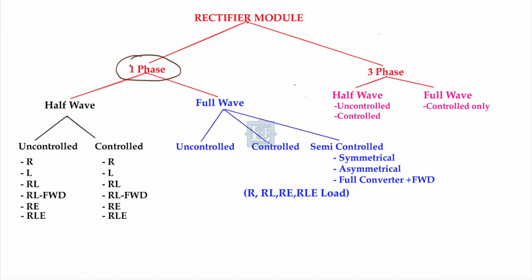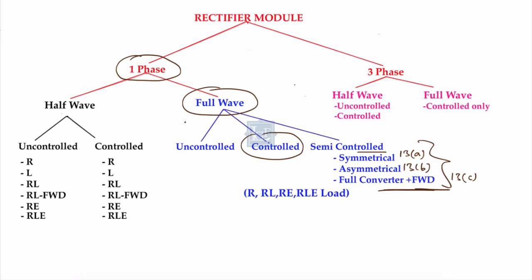In the last three lectures we covered the single-phase full-wave semi-controlled rectifier — lectures 13a, 13b, and 13c — and also did the Fourier series harmonic analysis of source current in the semi-controlled rectifier. Now in this lecture, lecture number 14, we will start the single-phase full-wave controlled bridge rectifier with RE type of load. We have already discussed RL and RLE type loads, but not RE type of load, so in this lecture we will cover that.